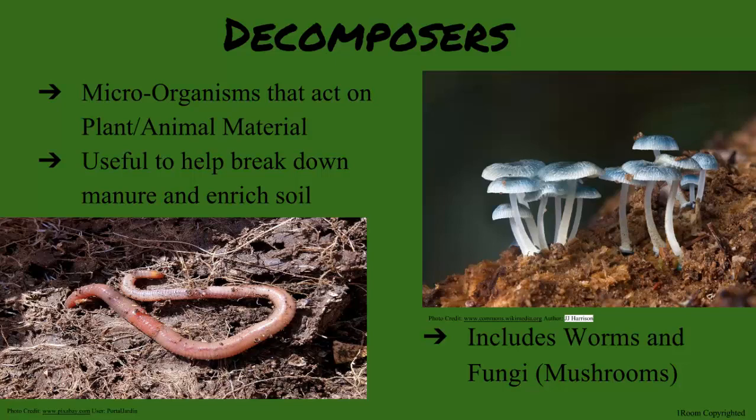Now, predators can be useful on a farm because they will hunt and kill the pests. A house cat is a perfect example of this. Of course, a lion is the other extreme and won't be beneficial around a cow.